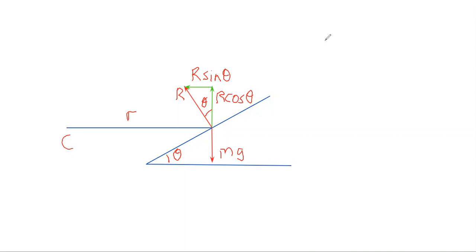Vertically, we must have that R cos theta equals mg. So effectively, we're resolving vertically. There's no acceleration in the vertical direction.